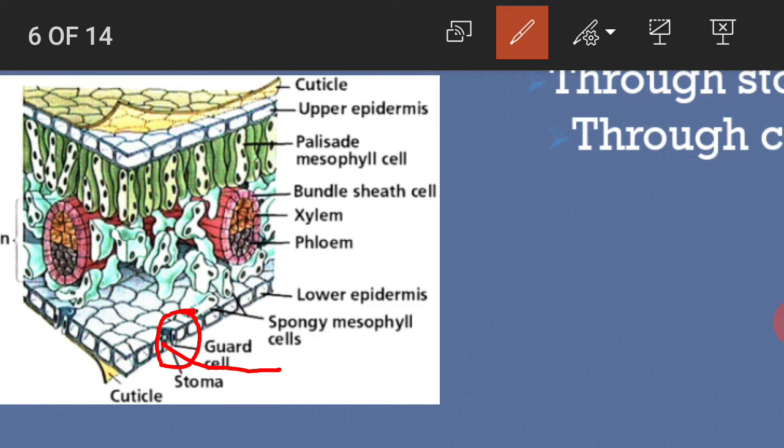Through cuticle: It occurs through the surface of the leaf. Cuticle is a waxy layer of the leaf. Some species are present here which allow the exchange of gases.